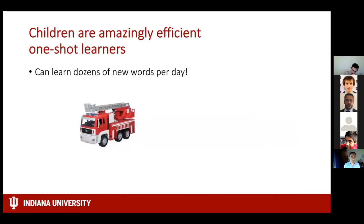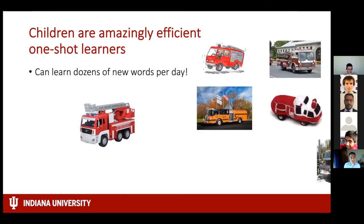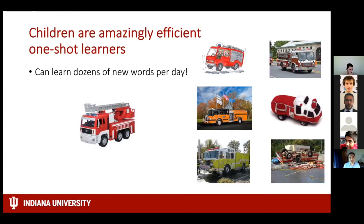Children are amazingly efficient one-shot learners. Our psychology colleagues tell us that at their peak, a young child can learn dozens of new words per day. Given maybe one toy fire truck that they play with for a while and see from lots of different perspectives as they manipulate it, they can then recognize every fire truck they'll ever see for the rest of their lives — even a drawing, a plush toy, a different color, or one completely in the wrong context. Computers right now cannot do this.